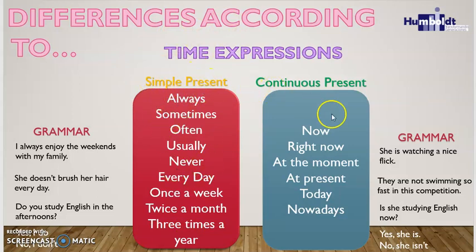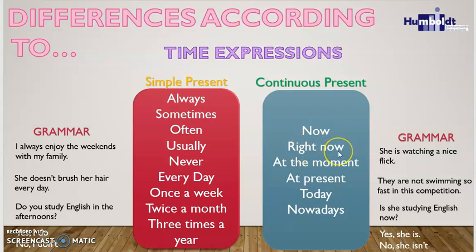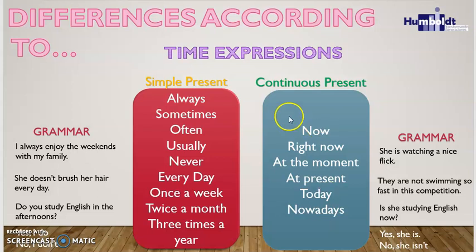When you see expressions like 'now,' 'right now,' 'at the moment,' 'at present,' 'today,' or 'nowadays,' you are using the continuous present, because it refers to an action that is progressing right now — it's happening right now. This is the difference according to the time expressions.